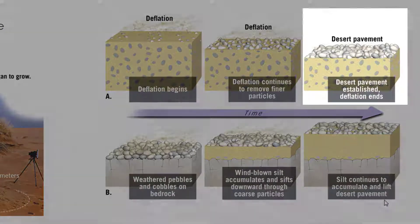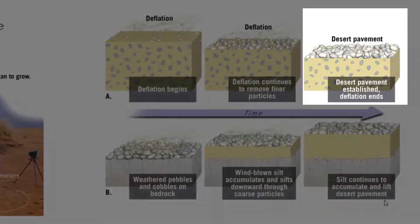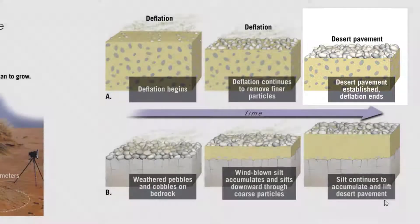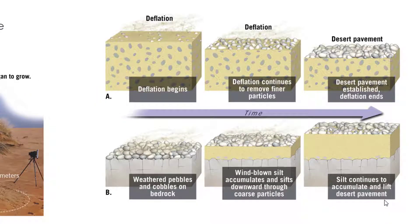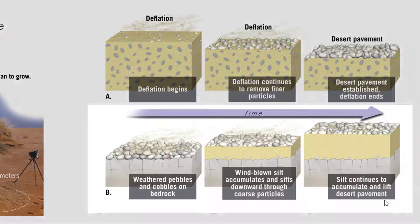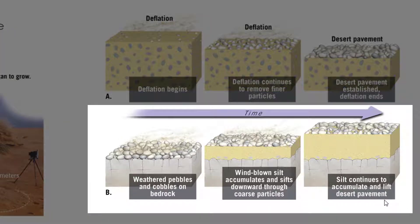Eventually, you will form what's called desert pavement, which is basically just all the larger pieces of sediment that the wind wasn't able to move, and all the finer sediment has been blown away. But what's kind of cool is, over time, desert pavement can be lifted — in other words, the surface can be raised through the process of deflation.